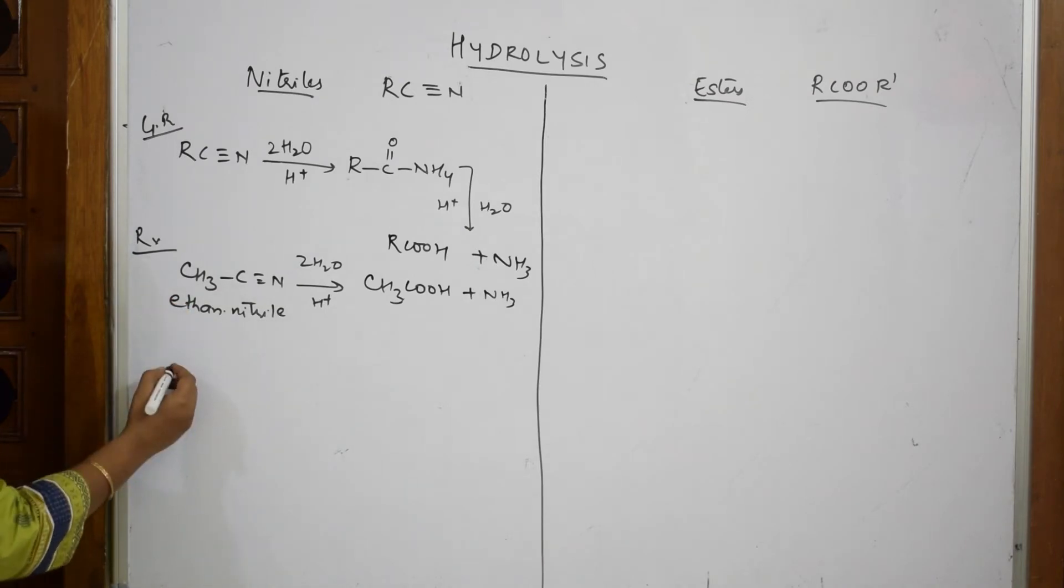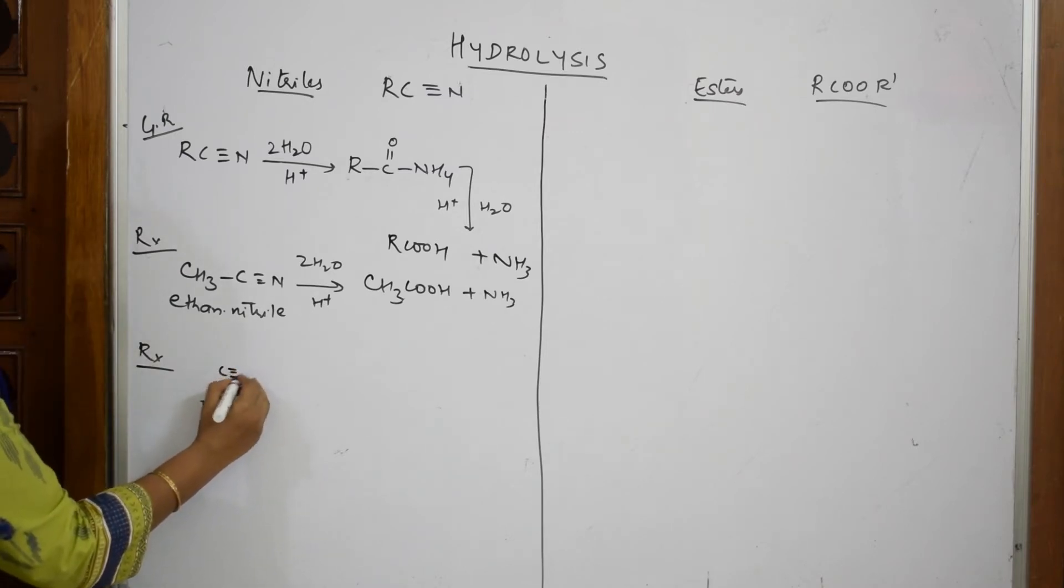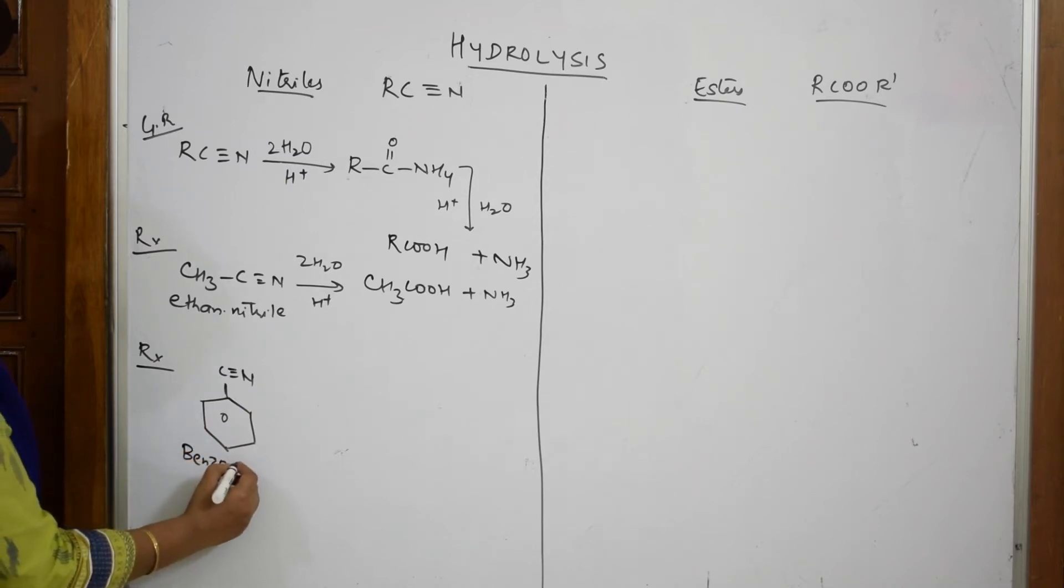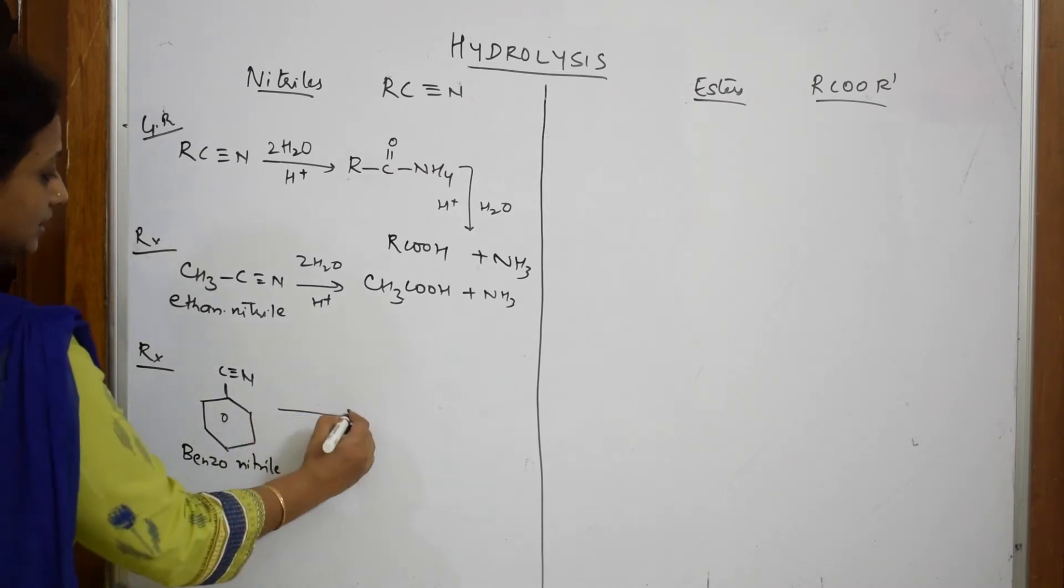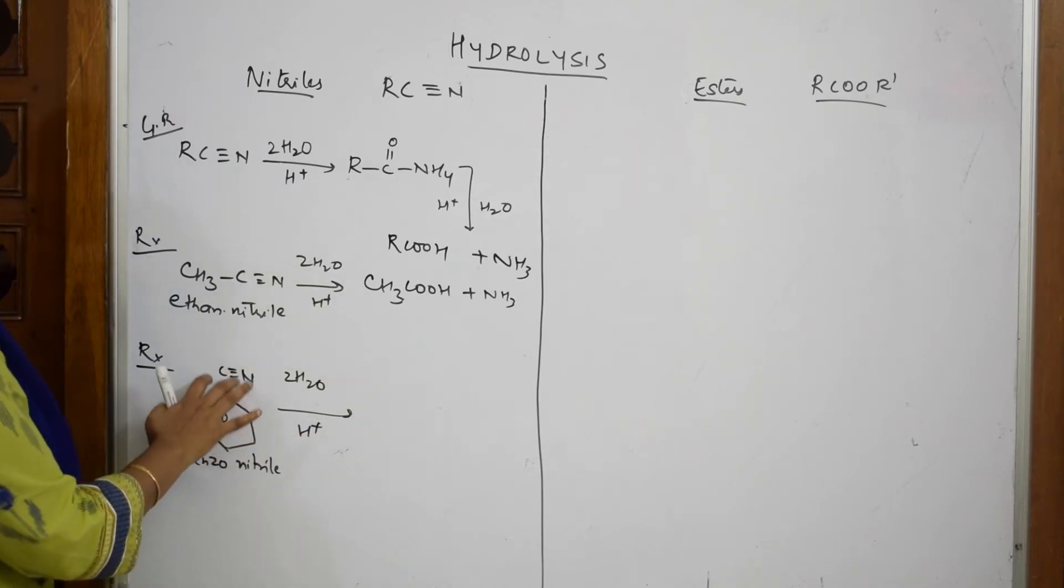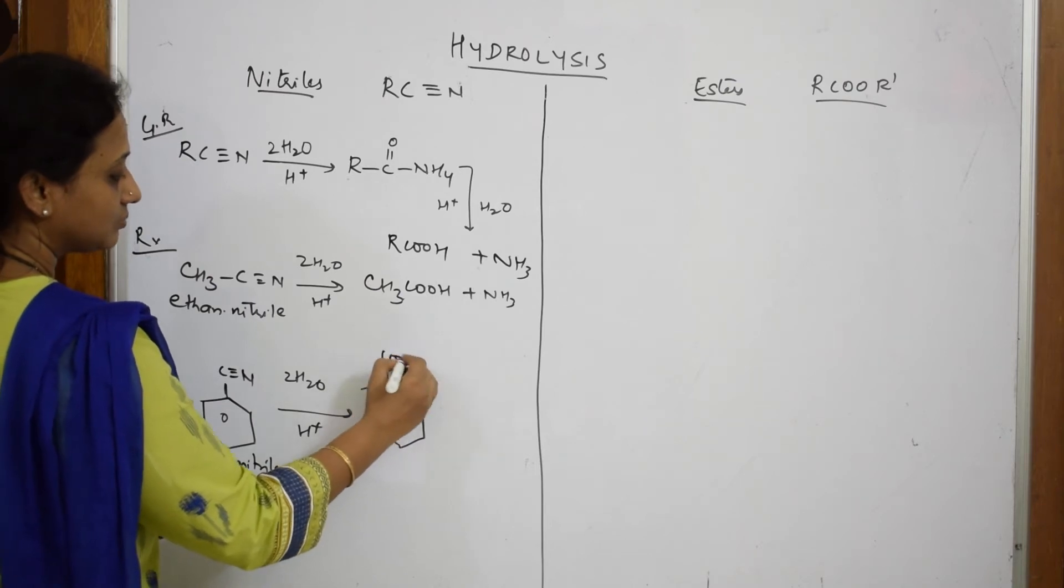Let us write one more reaction. Now I'm going to take an aromatic ring. This benzene ring with the nitrile group is called benzene nitrile or benzonitrile. When I hydrolyze it in the presence of mineral acid, this directly gets converted to benzoic acid plus ammonia.